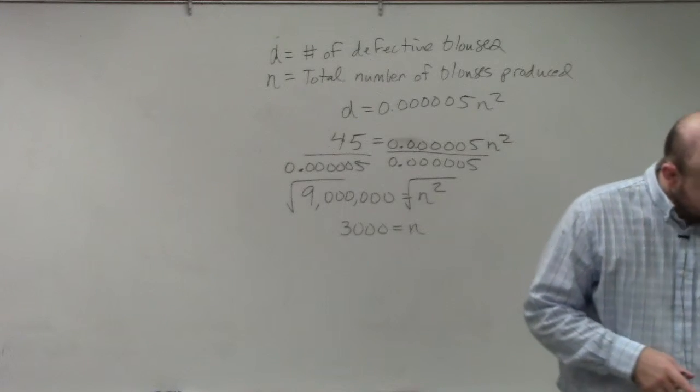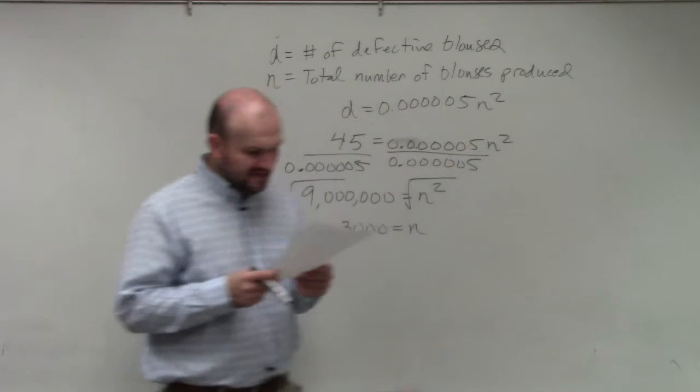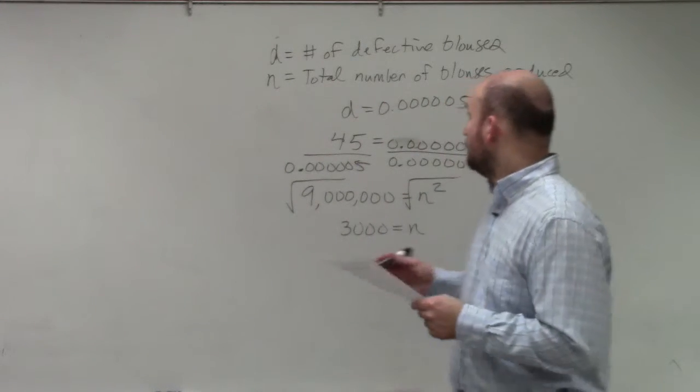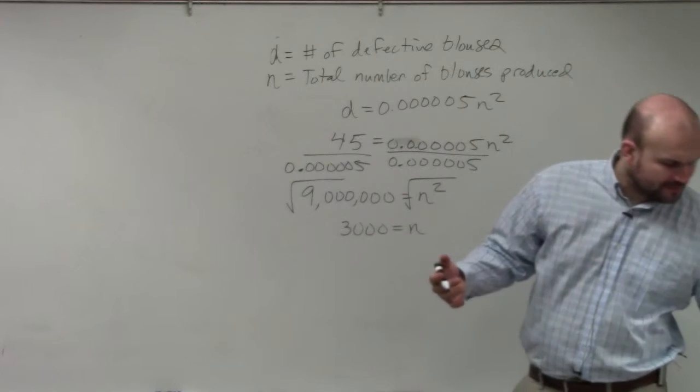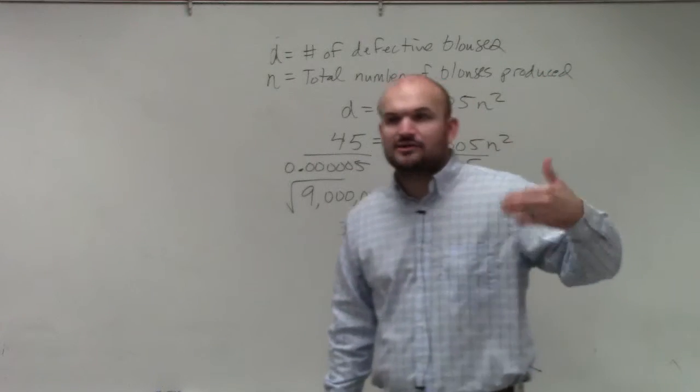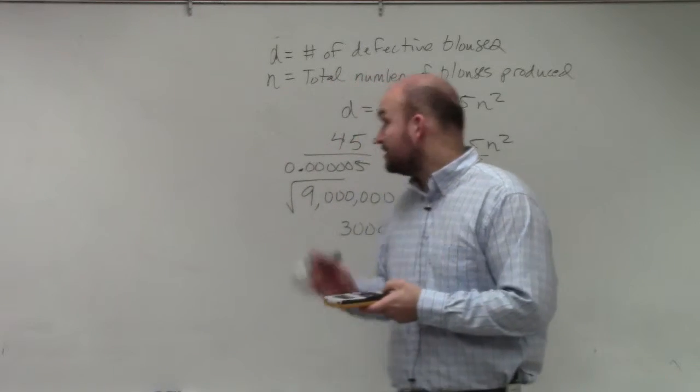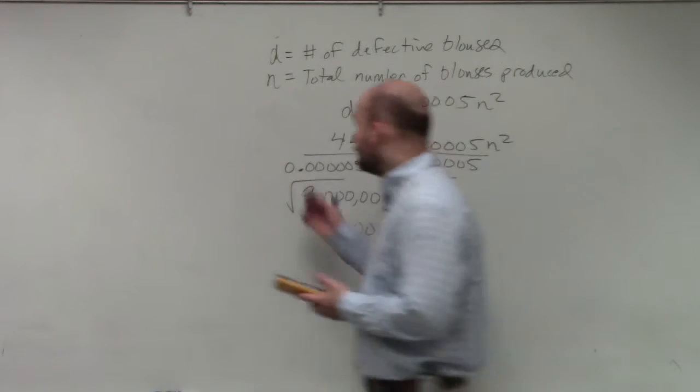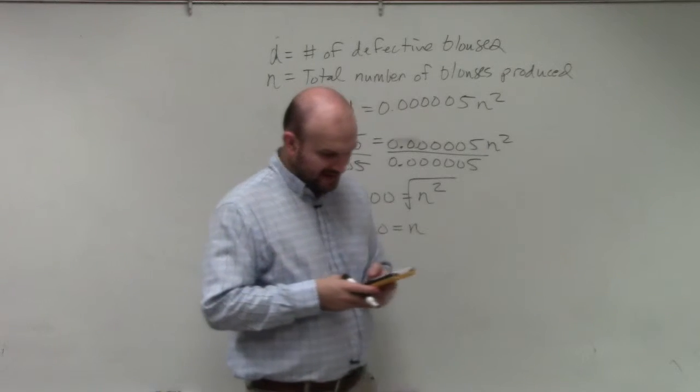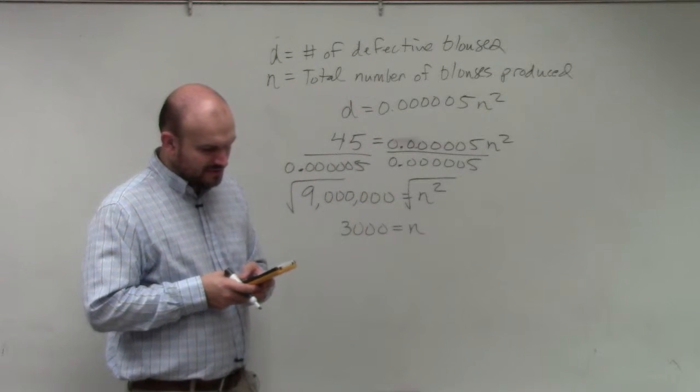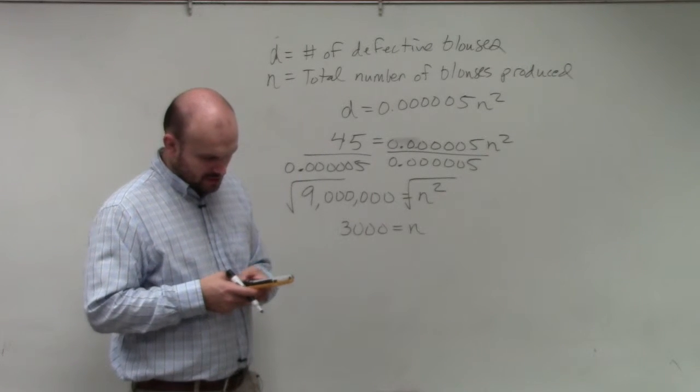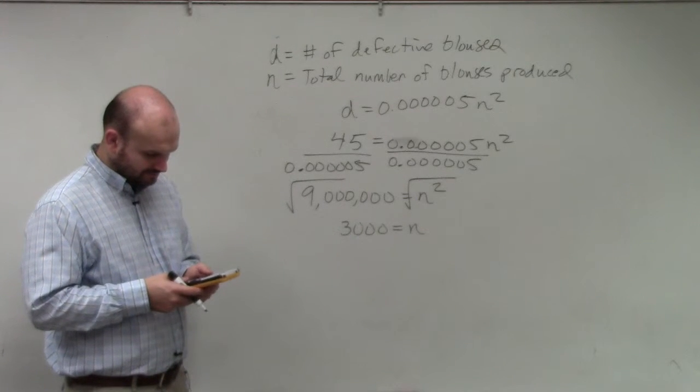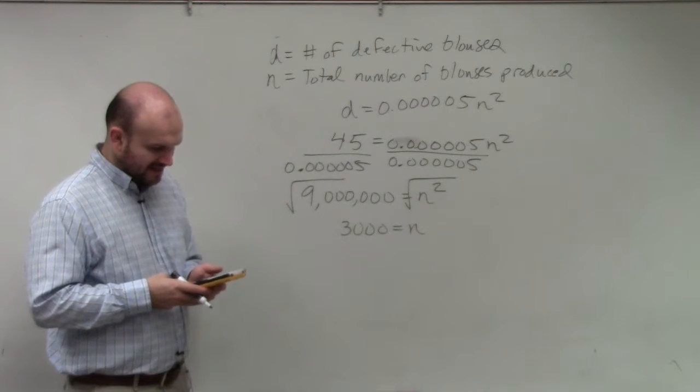Step number two, question number two. It says, if the number of defective blouses is increased by a factor of 9, how does the total number of blouses change? So if it's increased by a factor of 9, that would be a multiple of 9. So basically, I'm going to do this exact same problem, but I'm going to do 45 times 9, which is 405. So I'll do 405 divided by the exact same number, 0.00005. And then I'll take the square root of that answer, and I get 9,000.